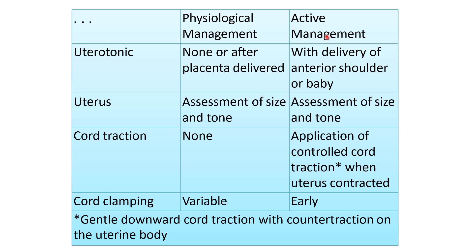In active management, the first measure is uterotonic drugs — drugs that produce uterine contractions. In physiological management you do not give uterotonics, or may give them after placenta delivery. But in active management, you give them after delivery of the shoulder. These drugs stimulate uterine contraction, which helps separation and expulsion of the placenta.